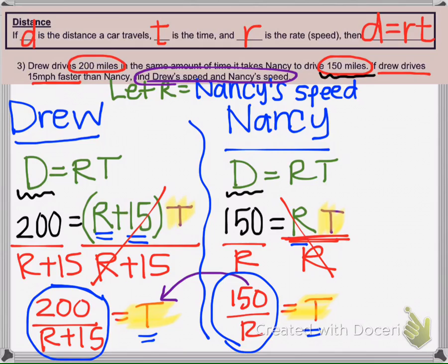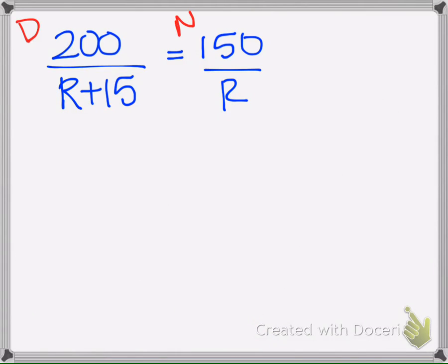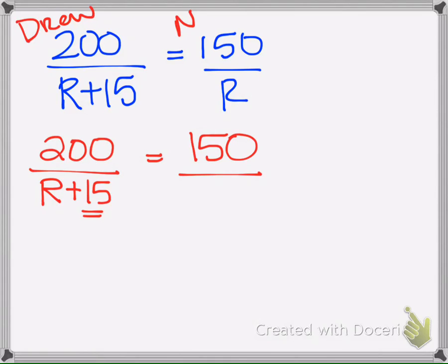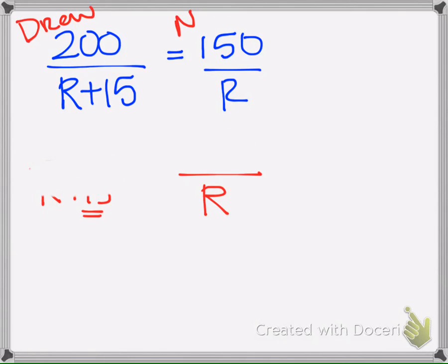So here we have Drew, this is Drew and this is Nancy. And we're going to set it up in a proportion where Drew drives 200 miles and his speed per R plus 15 because he drives 15 miles per hour faster. And then Nancy is 150 per whatever her speed is. So you could also set it up just by setting it up proportional.